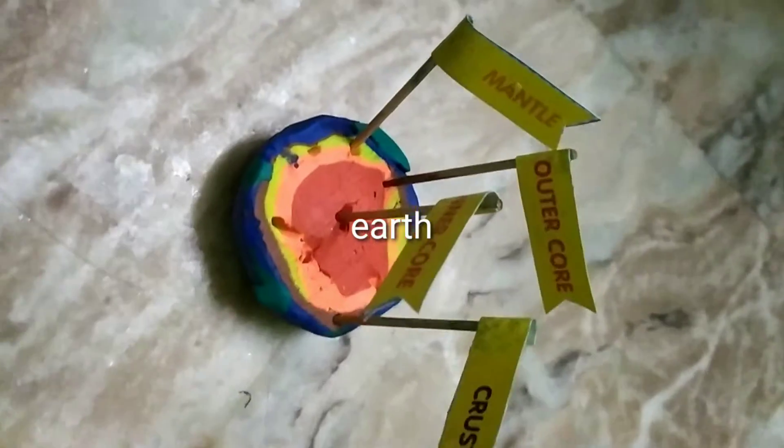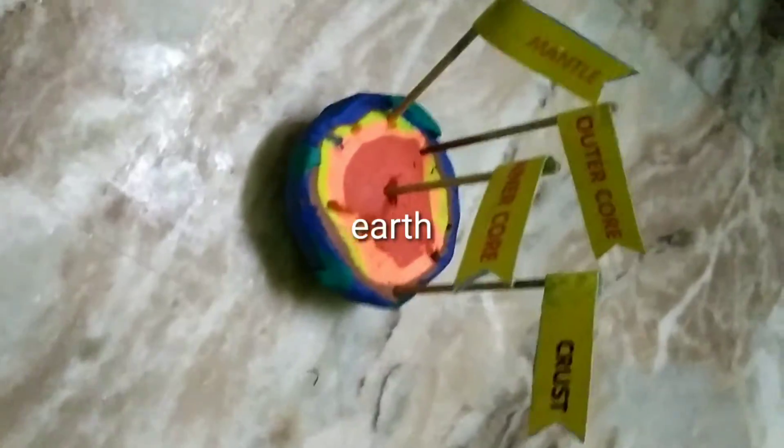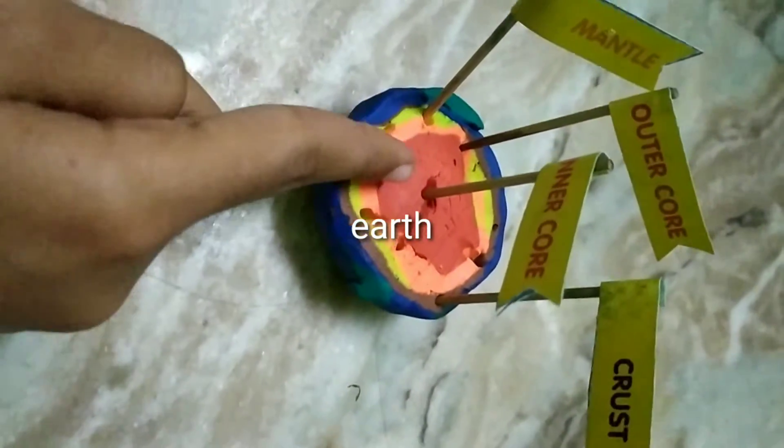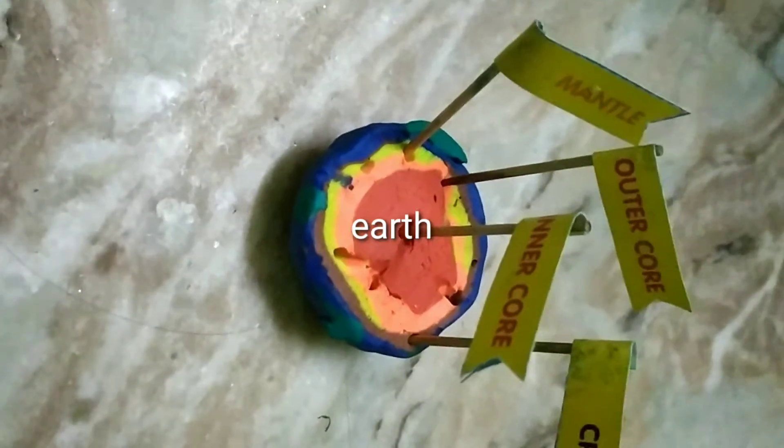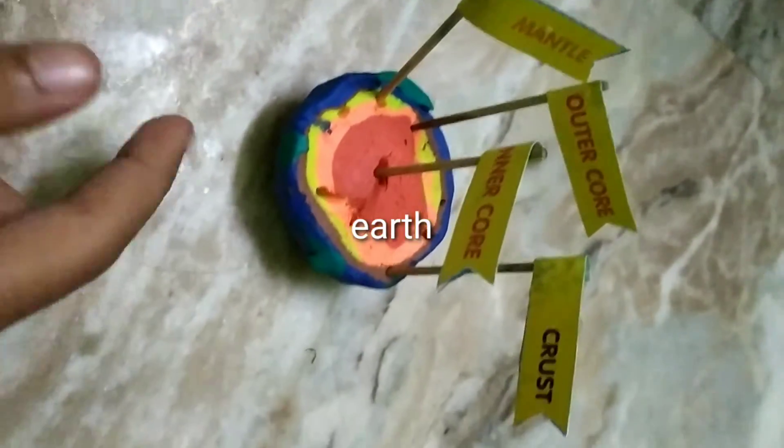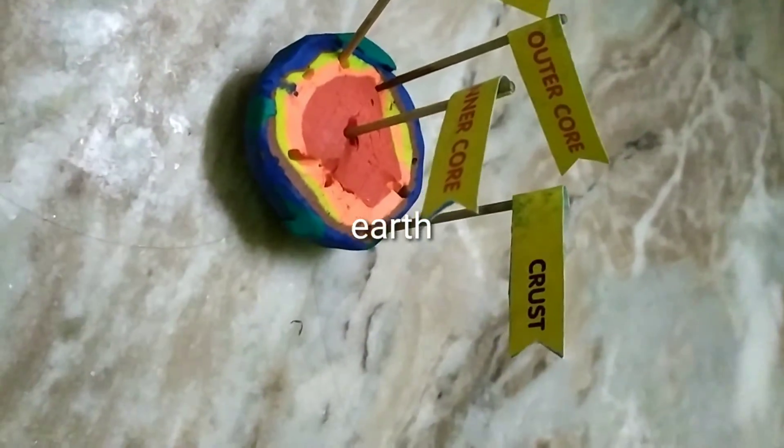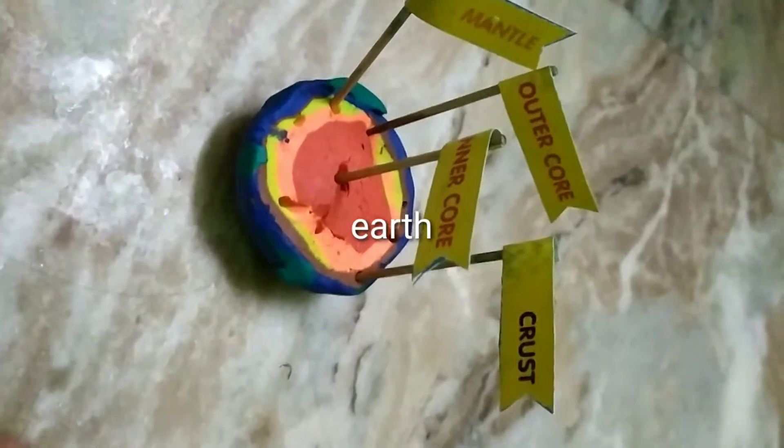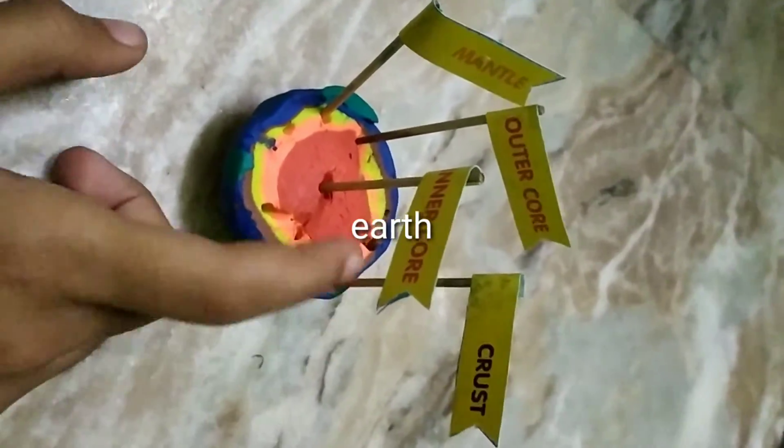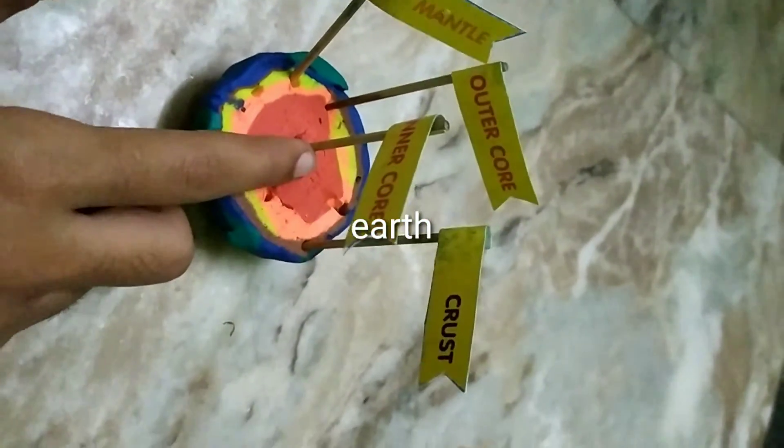It shows we have four layers in the Earth. The first layer is the inner core. The second layer is the outer core, represented as orange. The third layer is the mantle, represented as yellow. The fourth layer is the crust, represented as brown. And the inner core is represented as red.